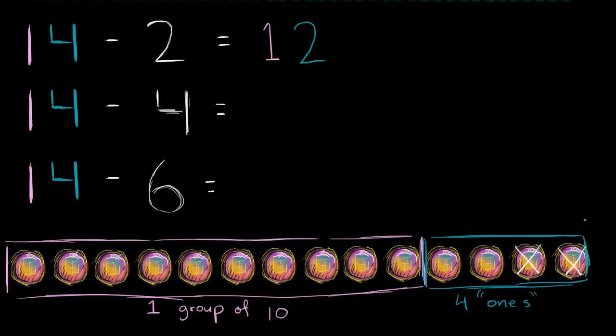Now what about 14 minus 4? Let me clear this out. So what is 14 minus 4 going to be? Now I'm going to take away 1, 2, 3, and 4. I've essentially taken away all 4 ones. So what am I left with?